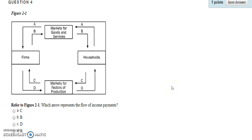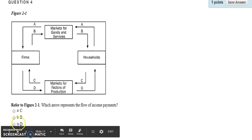Question four: Which arrow represents the flow of income payment? Every time we hear something that has to do with money, we look at the outside of the Circular Flow Diagram, because the outside represents the flow of money. When dealing with payments it is either A or D. A represents spending and the other side is revenue; D represents wages and income. The arrow that represents the flow of income payment is D, so the answer is C.